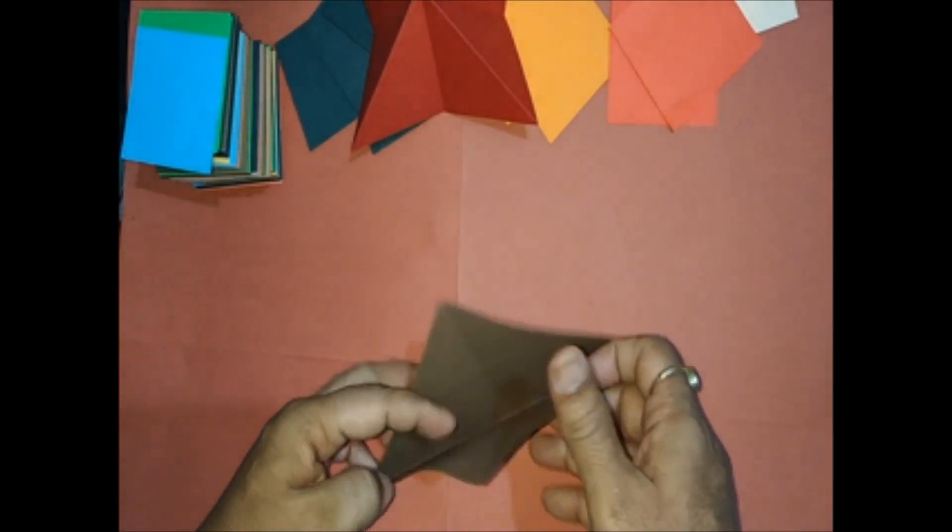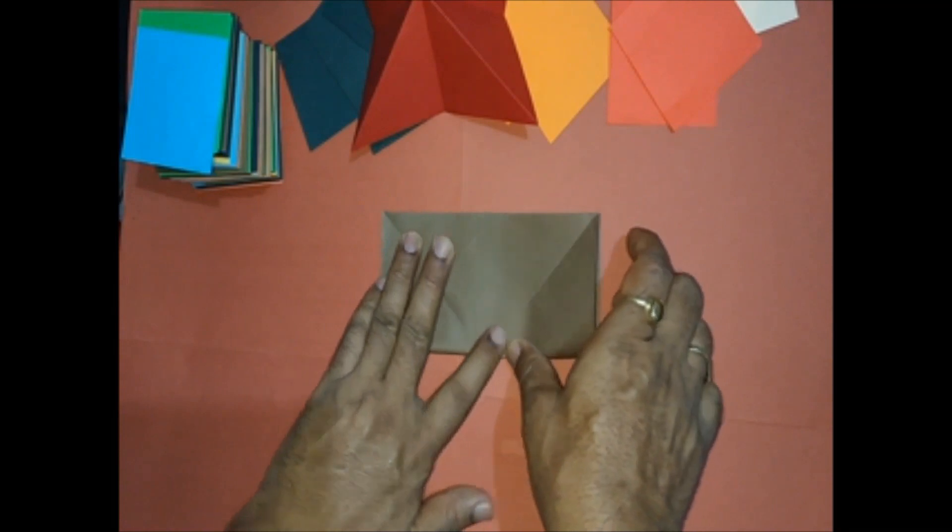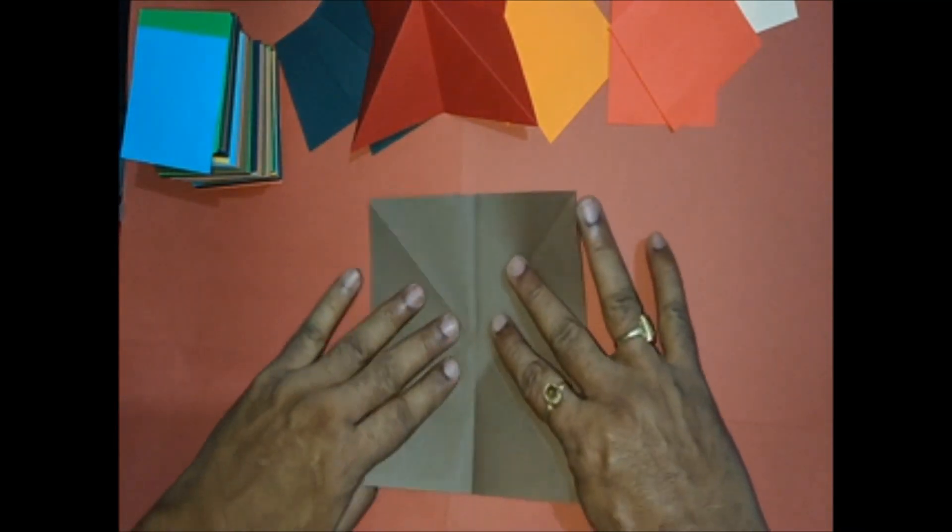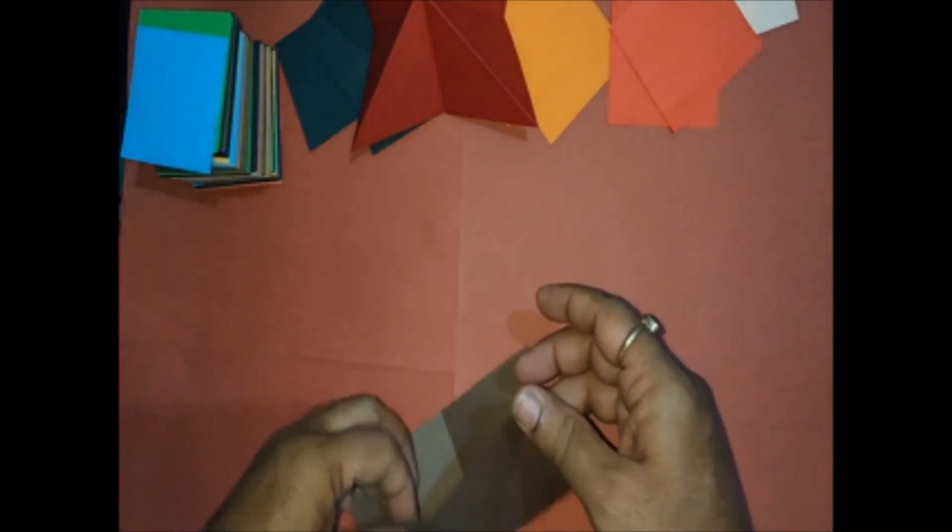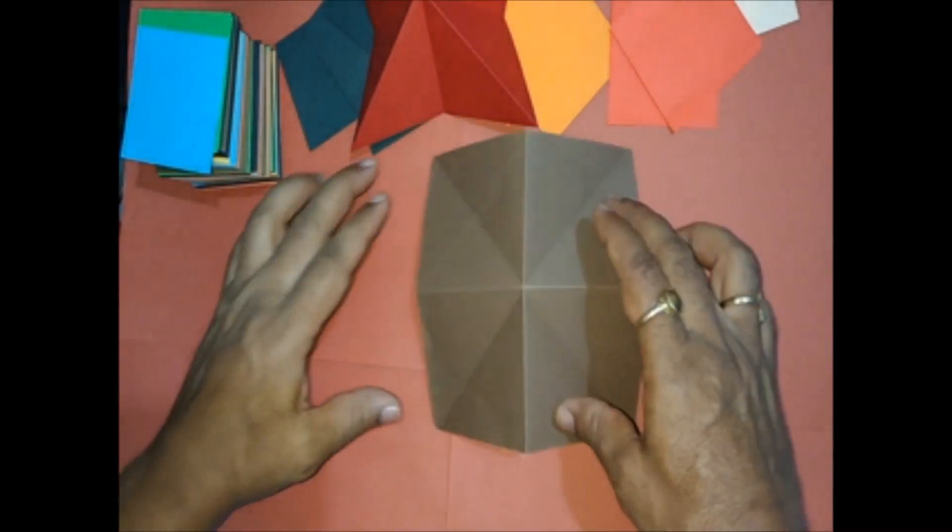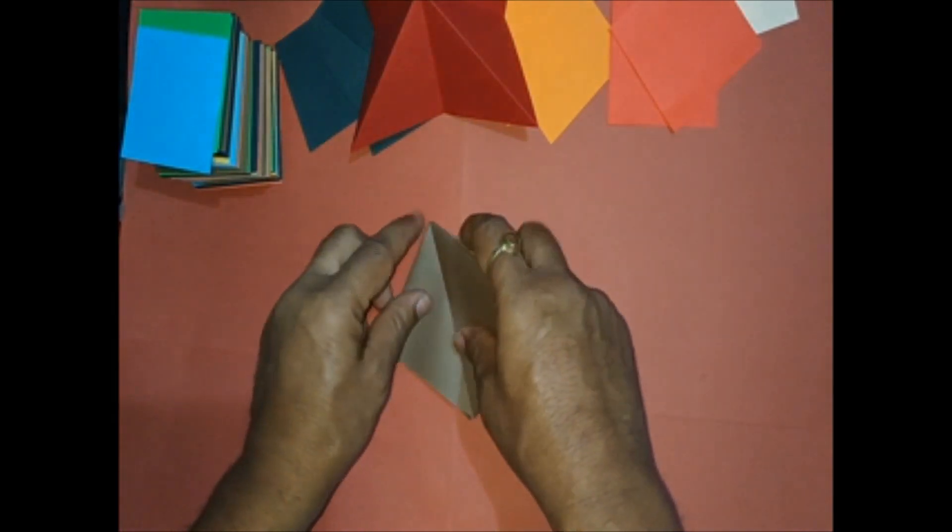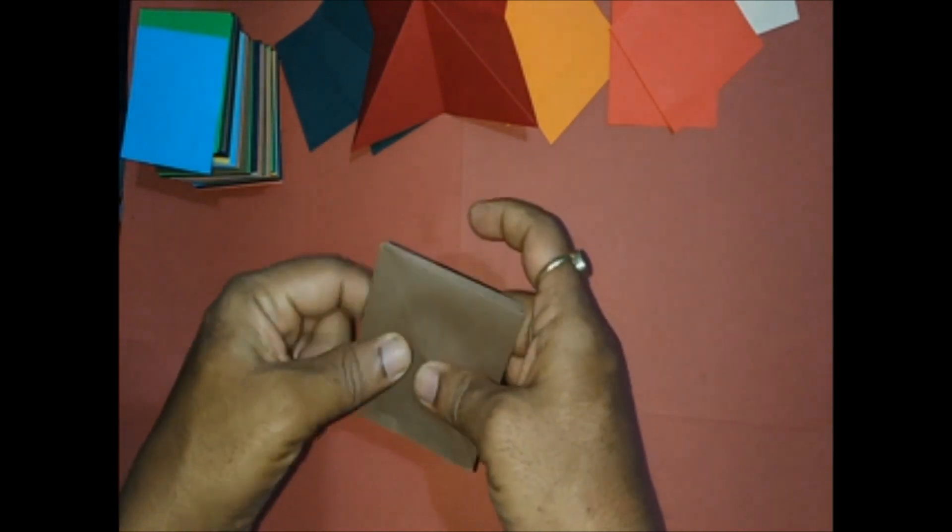And on the back side make the rectangular folds. The unit is ready. The paper gets automatically folded into a square basic fold. And we need 6 such units.